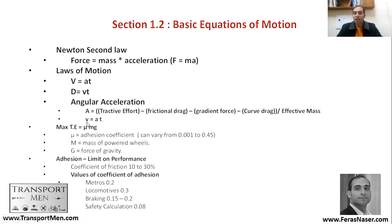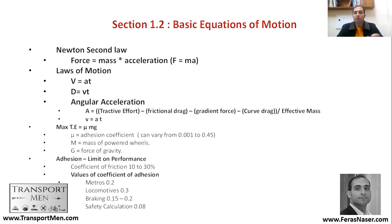Once you have acceleration you can calculate speed: V equals acceleration multiplied by time. To calculate tractive effort, you need the adhesion coefficient, which we discussed before. It can vary between 0.001 and 0.45. Typical values: coefficient of friction is usually 10–30%; for metros the adhesion coefficient mu is 0.2; for locomotives it's 0.3; for braking, 0.15 to 0.2; and for safety calculations, 0.08.